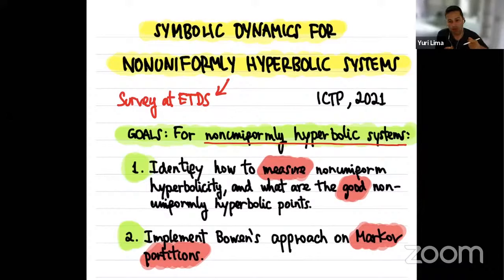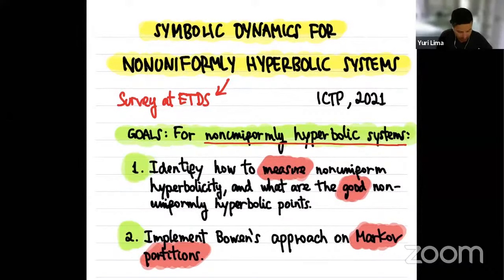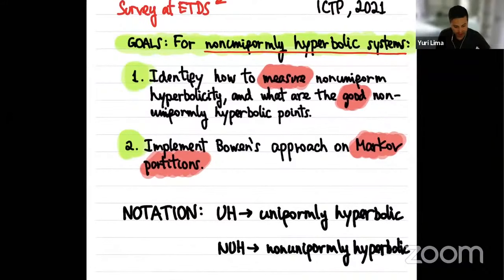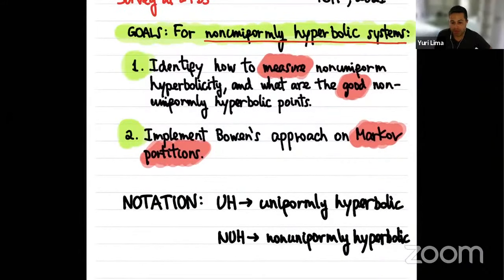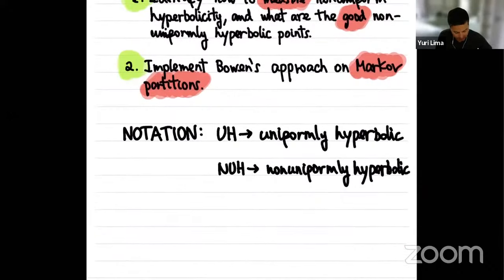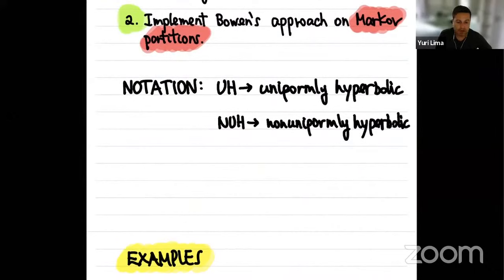Maybe some of you have never heard about some of these names, but I believe during the lectures you will become more familiar with these concepts. Let me introduce some notations: whenever I write UH, I refer to uniformly hyperbolic systems; whenever I write NUH, I refer to non-uniformly hyperbolic systems. Let's start with examples — I would like to give you a list of examples you should have in mind during my lectures.